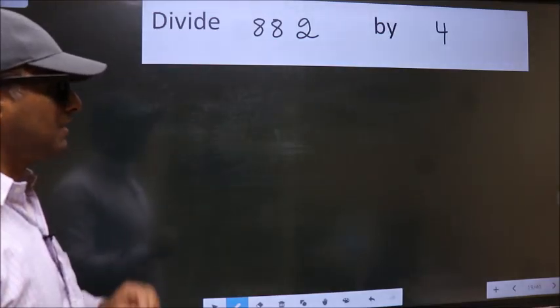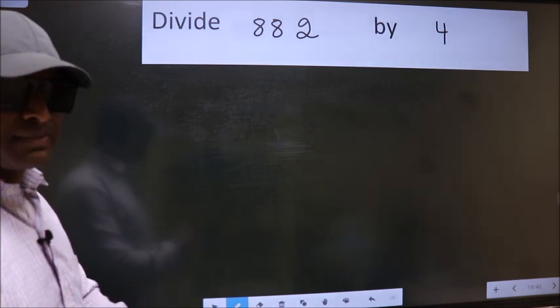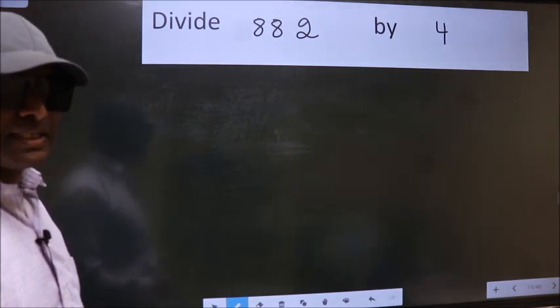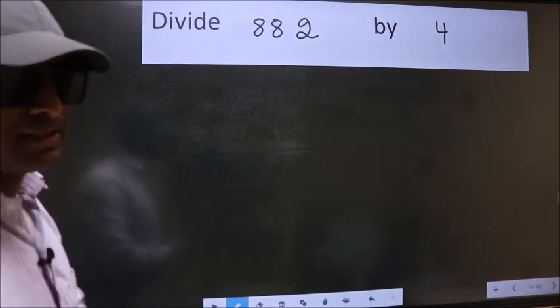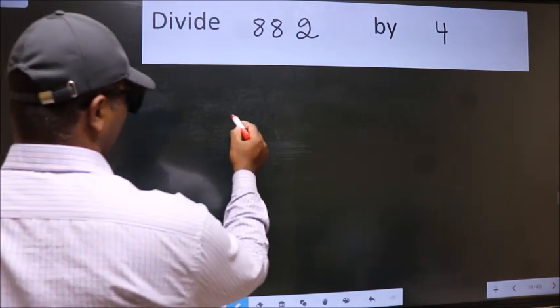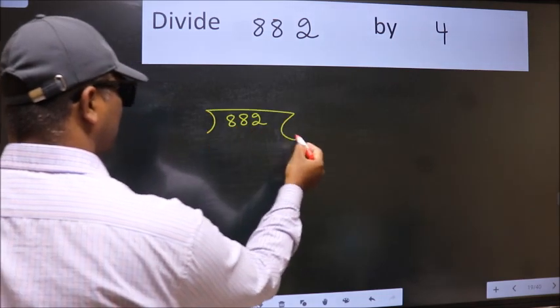Divide 882 by 4. While doing this division, many do this mistake. What is the mistake that they do? I will let you know. But before that, we should frame it in this way. 882 here. 4 here.